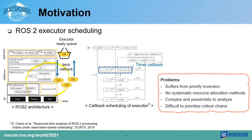Once the queue has a callback, the executor follows its own scheduling algorithm. This right figure describes the callback scheduling algorithm within an executor. When the ready queue is not empty, the scheduler selects a callback based on the order of callback types. As we can see here, the scheduler always first checks for timer callbacks, then checks subscription, service, and client callbacks in order. This iteration goes on until the queue is empty.